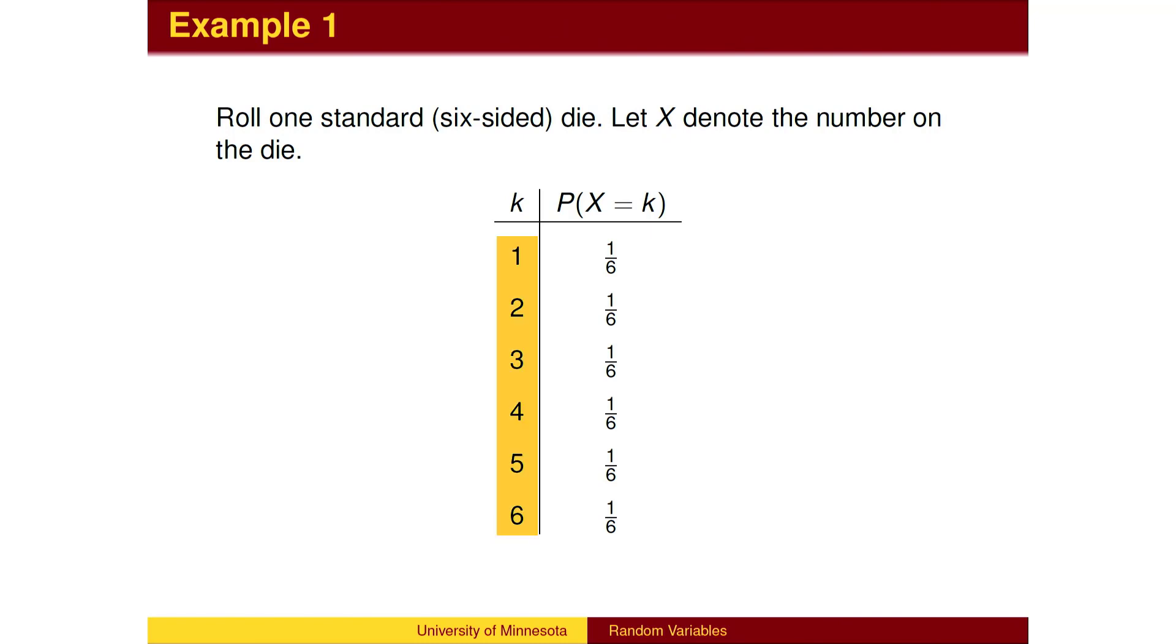When rolling one die, there are six possible values that are the six possible outcomes. We generally use the variable x to represent this unknown value.